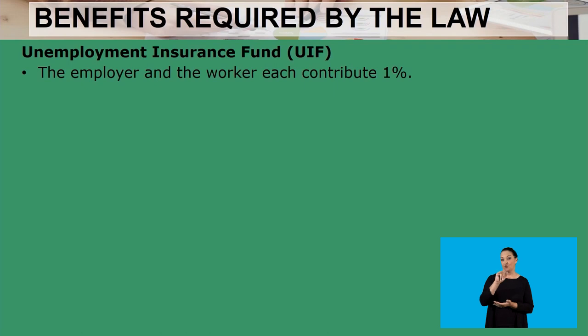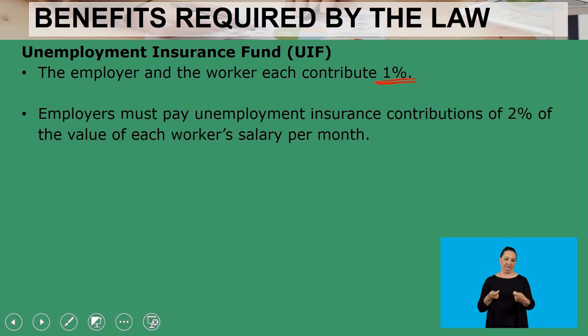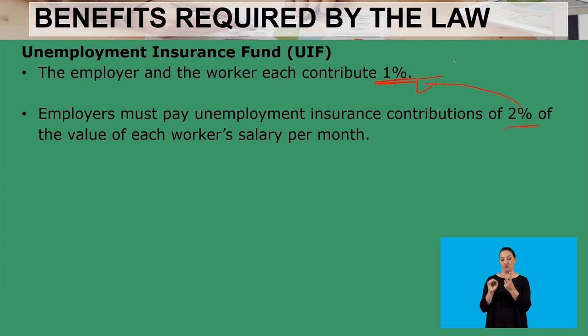Now we look at benefits required by law. Remember, fringe benefits are not required by law and are not compulsory. Benefits required by law are compulsory and enforceable. We start with the Unemployment Insurance Fund, the UIF. The employer and the worker each contribute one percent. Employers must pay unemployment insurance contributions of two percent — made up of one percent from the employer plus one percent from the employee.